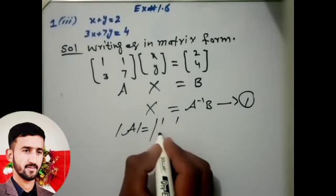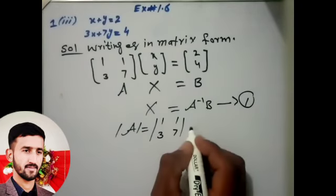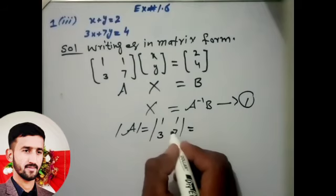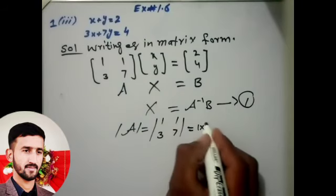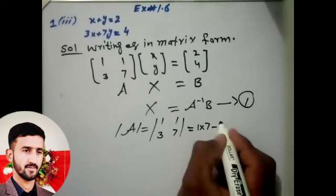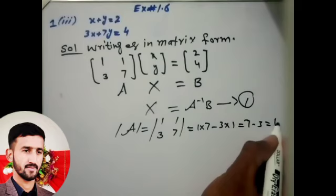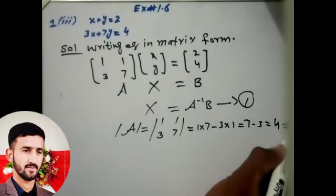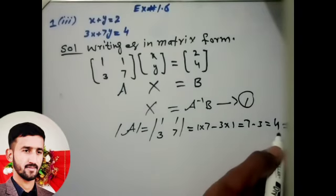Determinant of this matrix: by cross multiplication, 1 multiplied by 7, minus by formula 3 multiplied by 1, is equal to 7 minus 3, equals 4, not equal to 0. So it's non-singular solution.